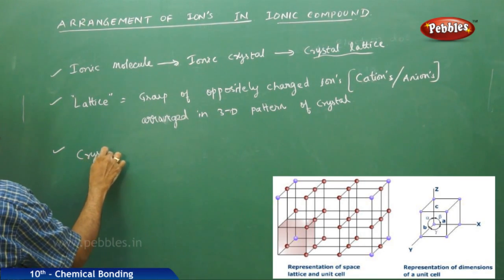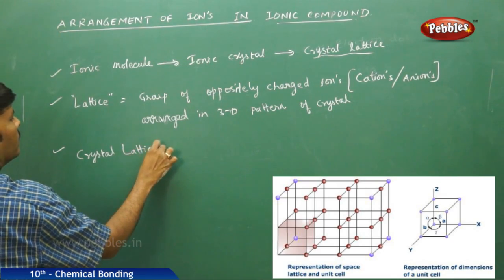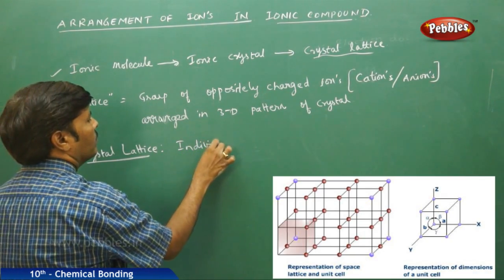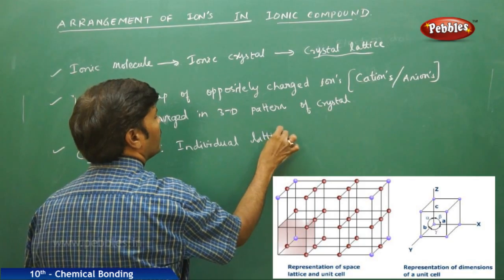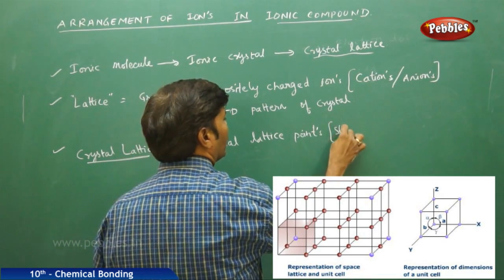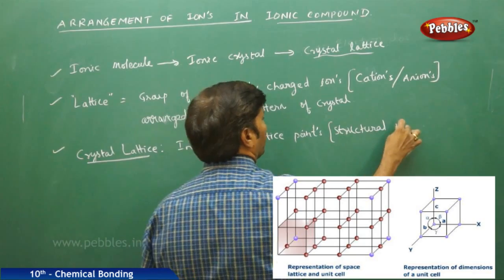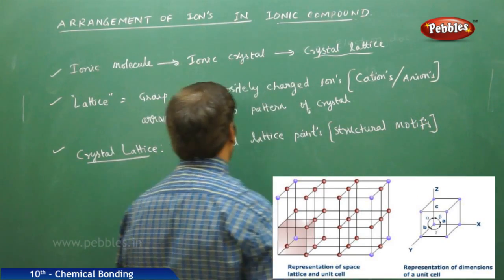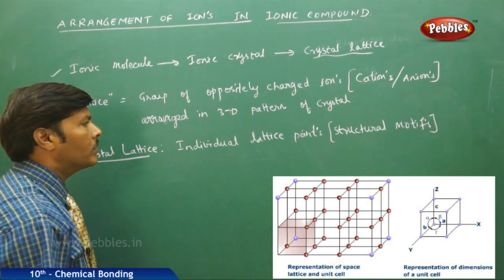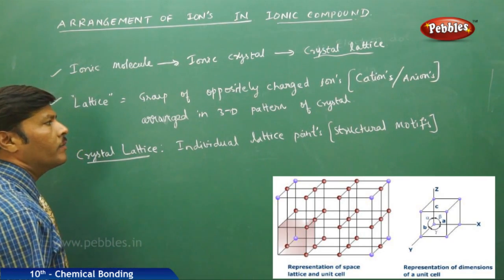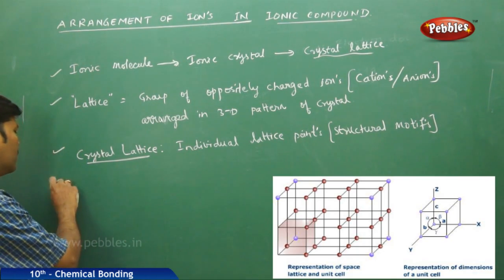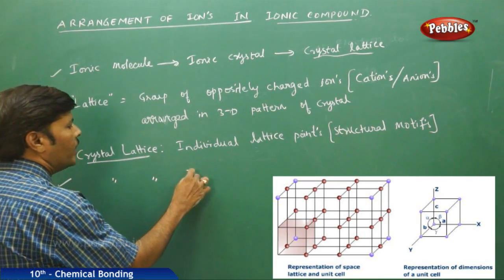A crystal lattice is identified by individual lattice points. These lattice points are also called structural motifs, which move in a definite pattern. Because of this three-dimensional pattern in a crystal lattice, the structural motifs are nothing but the lattice points. This crystal lattice is, in fact, a three-dimensional unit cell.